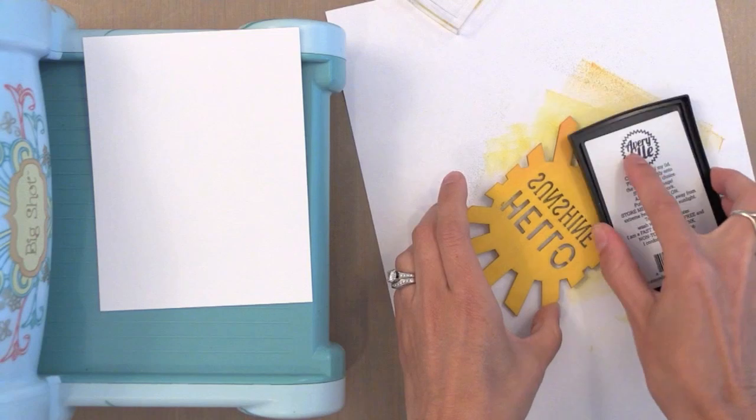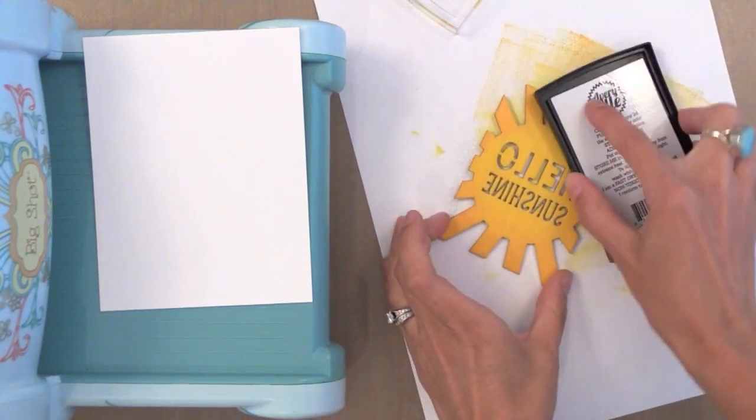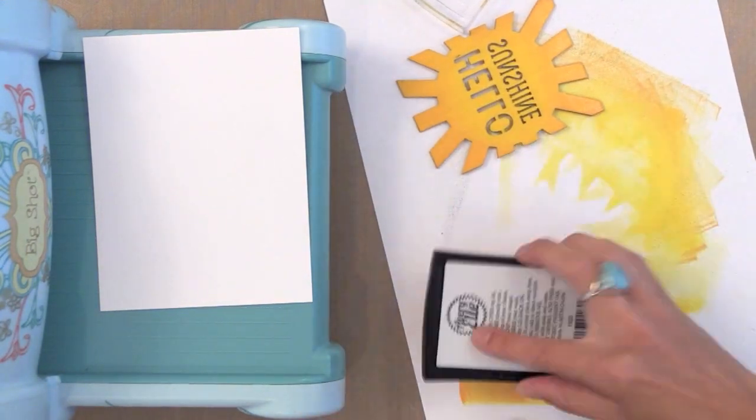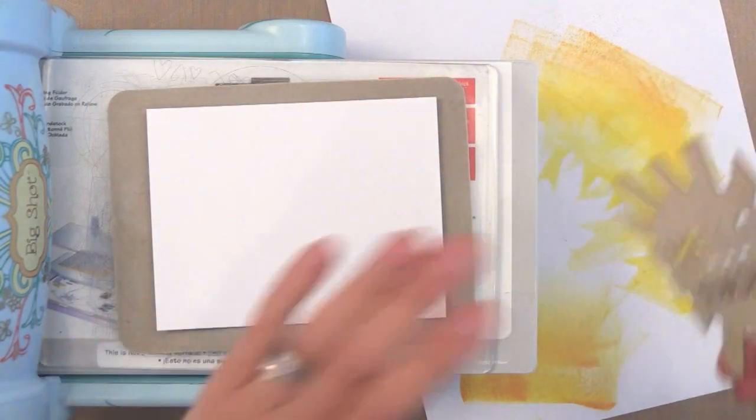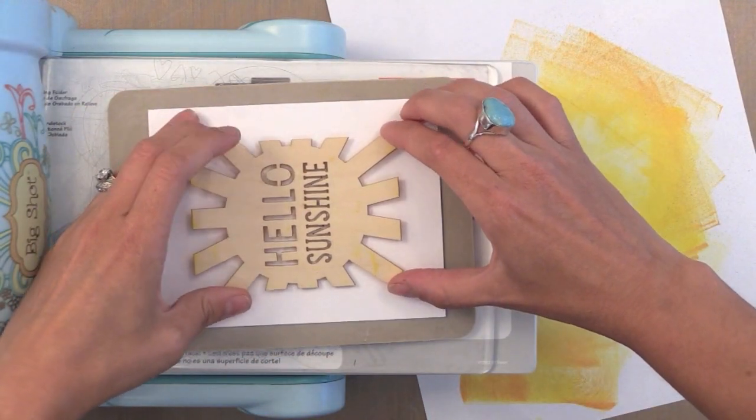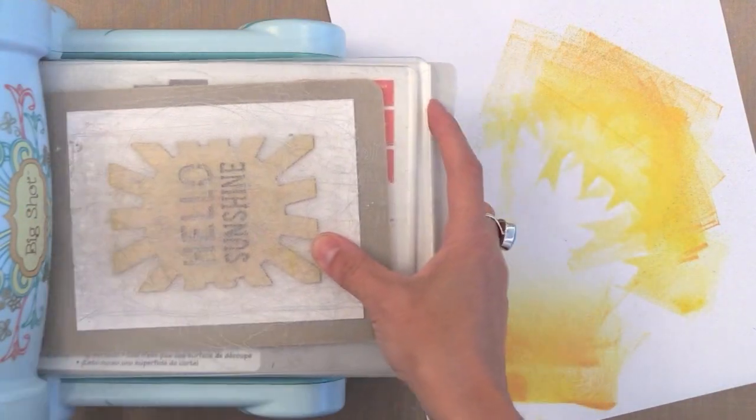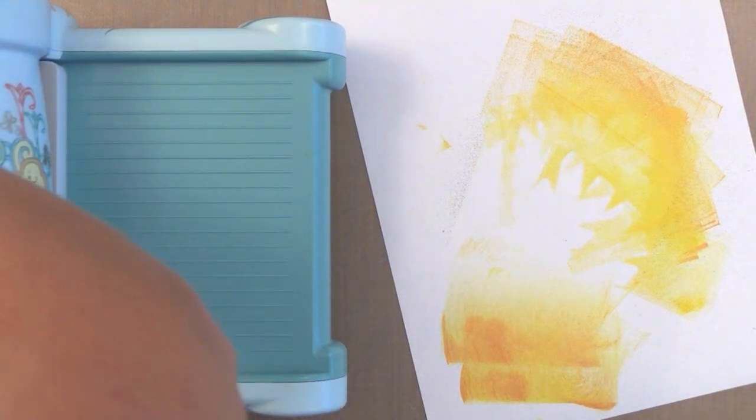This time I'm going in with some Avery Elle orange ink and just putting a little bit along the edges. Now yes some of the yellow ink gets on my orange ink pad, but I'm just going to smear it off on scrap paper and nobody will ever know. So this just puts a little bit of orange ink on the outside of it.